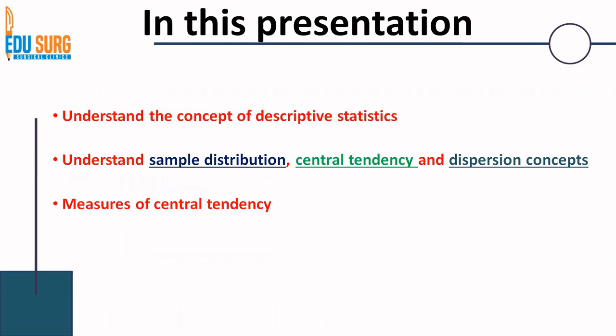We are going to understand the concepts of sample distribution, measures of central tendency, and dispersion. If you understand these words well, the calculations are very easy. What is important is that statistics has never been studied as a concept — it has been studied as mathematics, which is wrong.